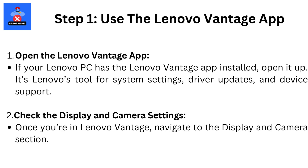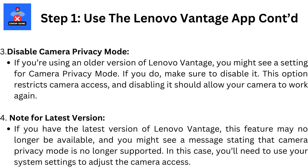Disable Camera Privacy Mode. If you're using an older version of Lenovo Vantage, you might see a setting for camera privacy mode. If you do, make sure to disable it. This option restricts camera access, and disabling it should allow your camera to work again.